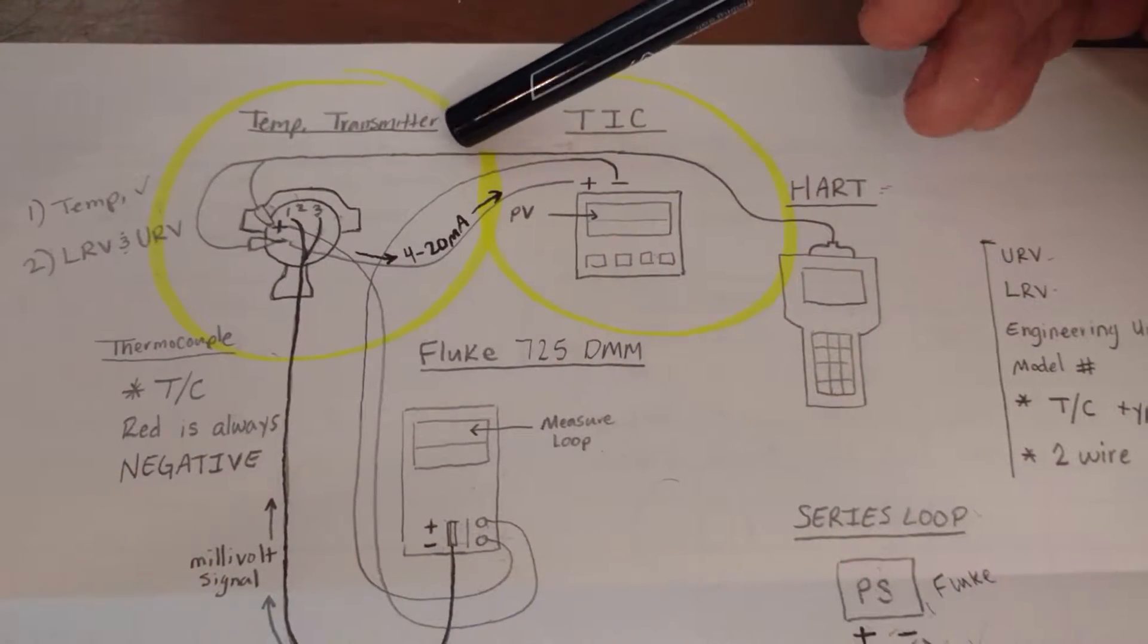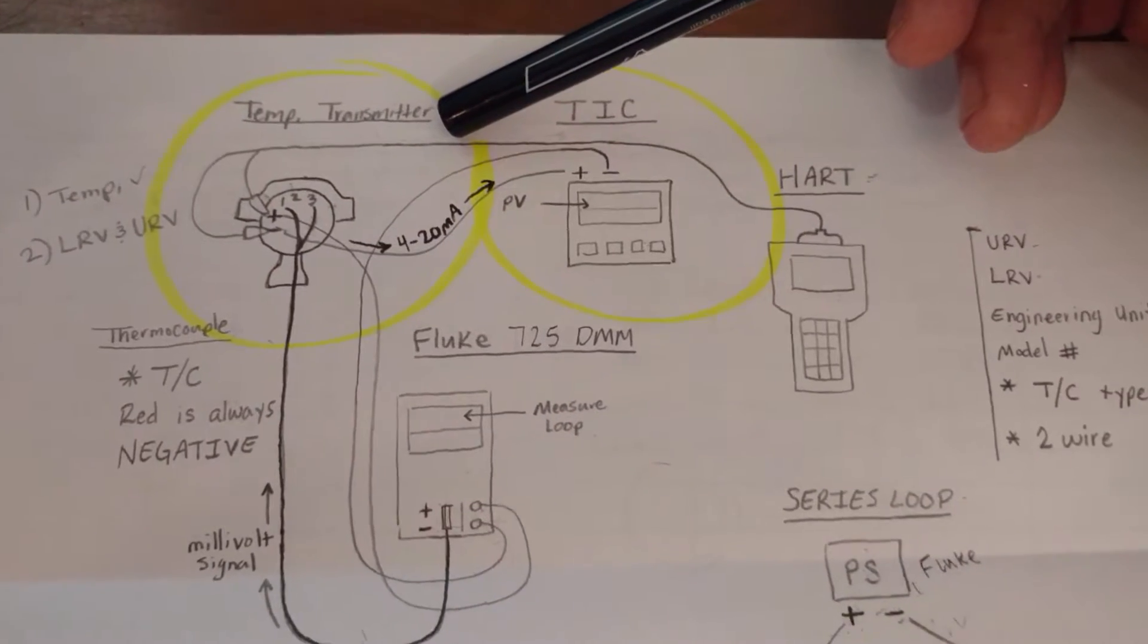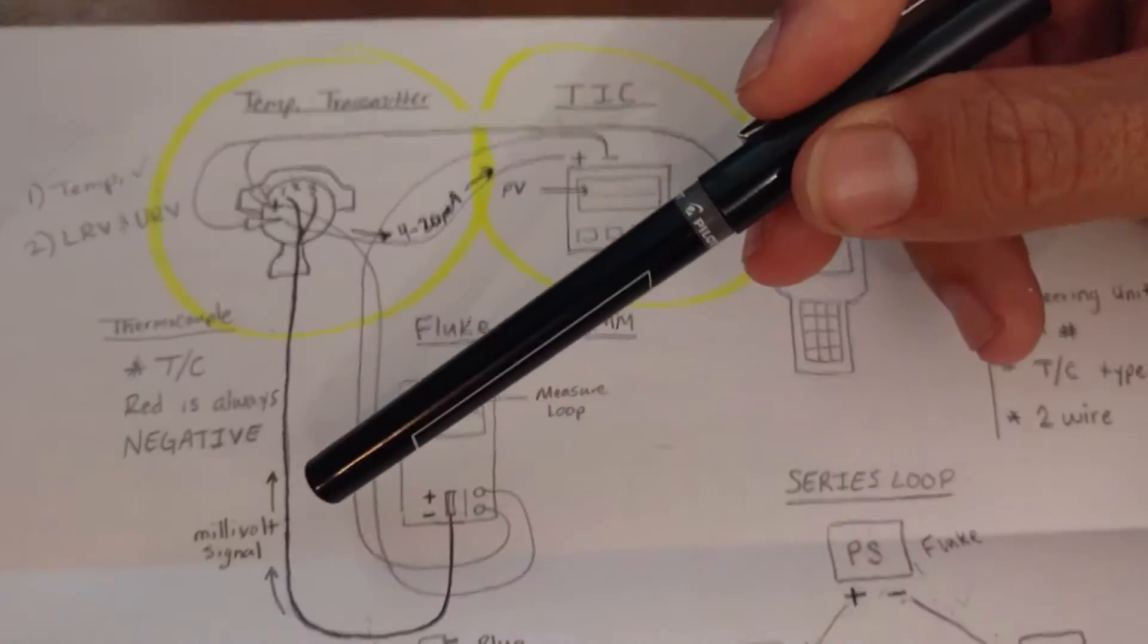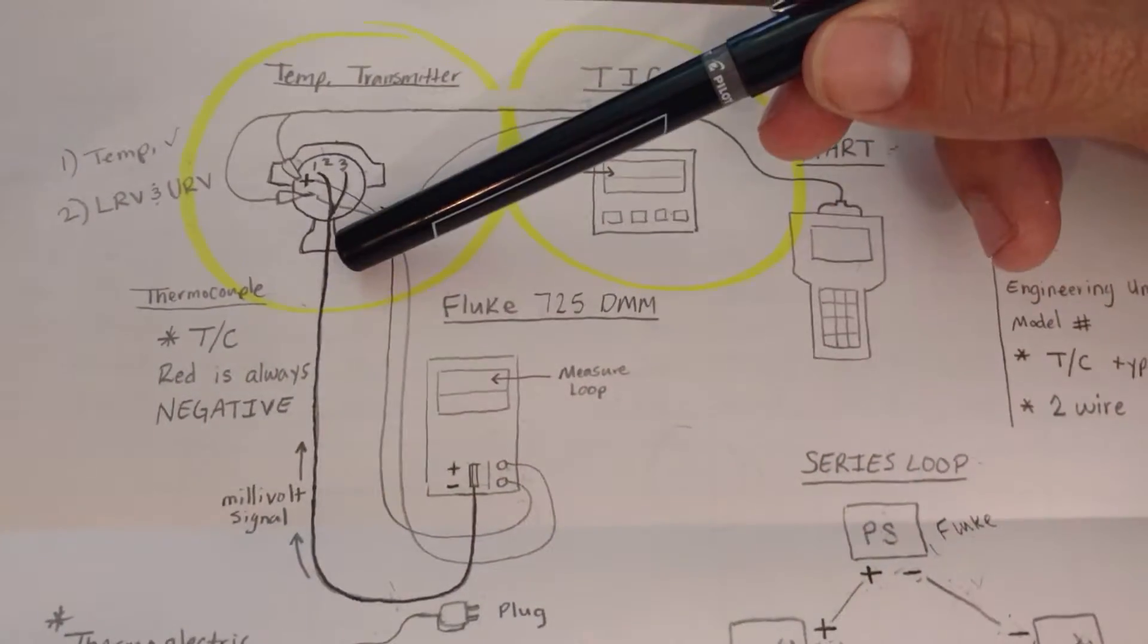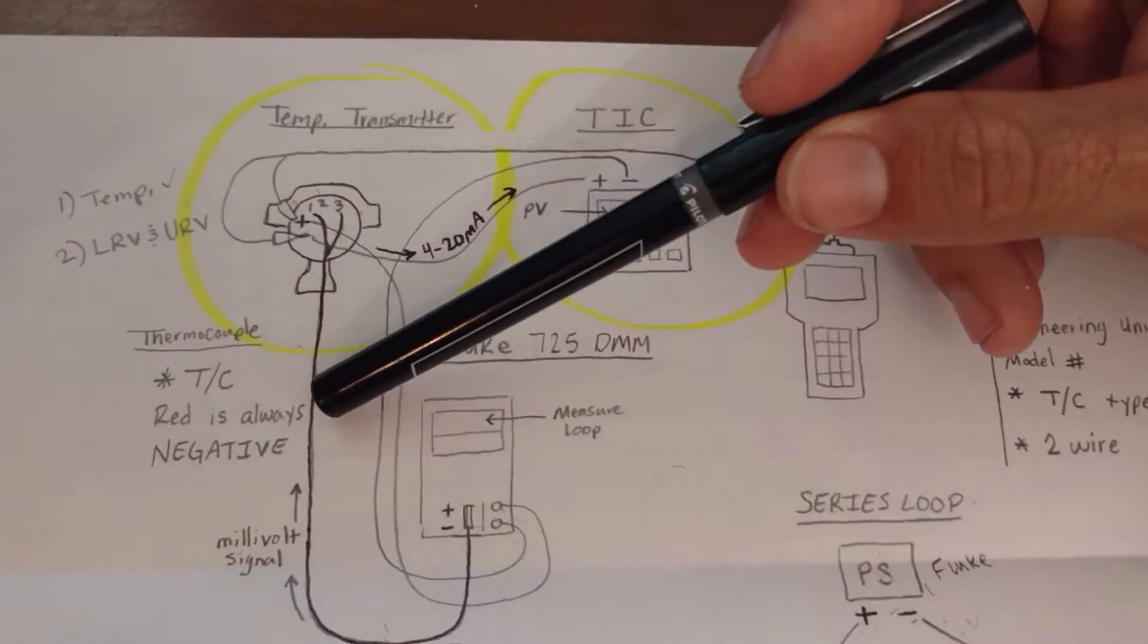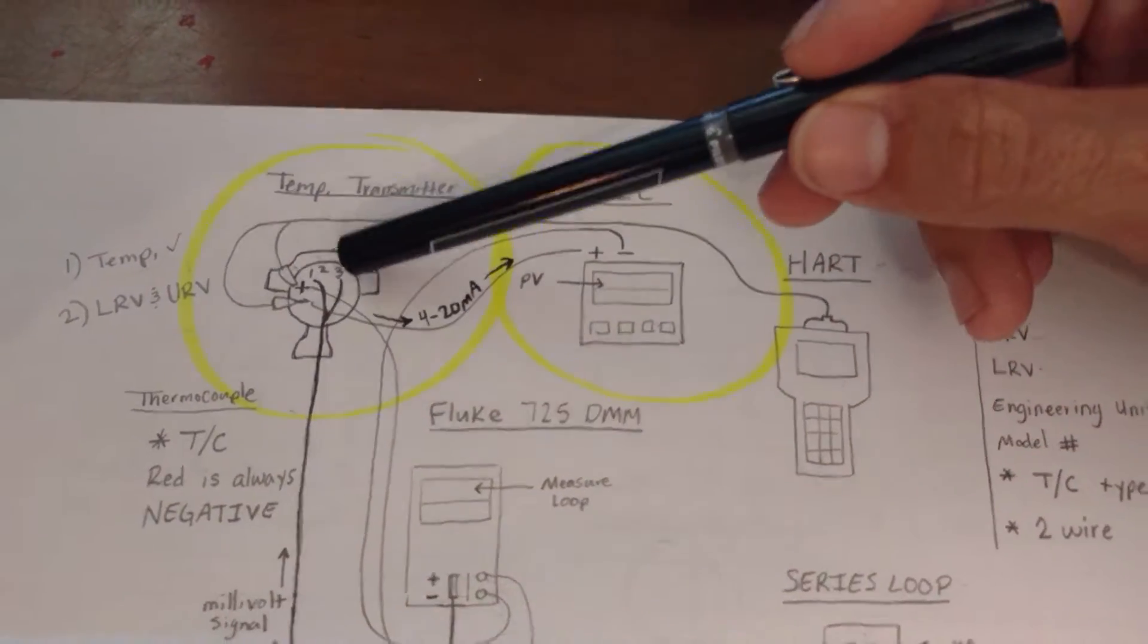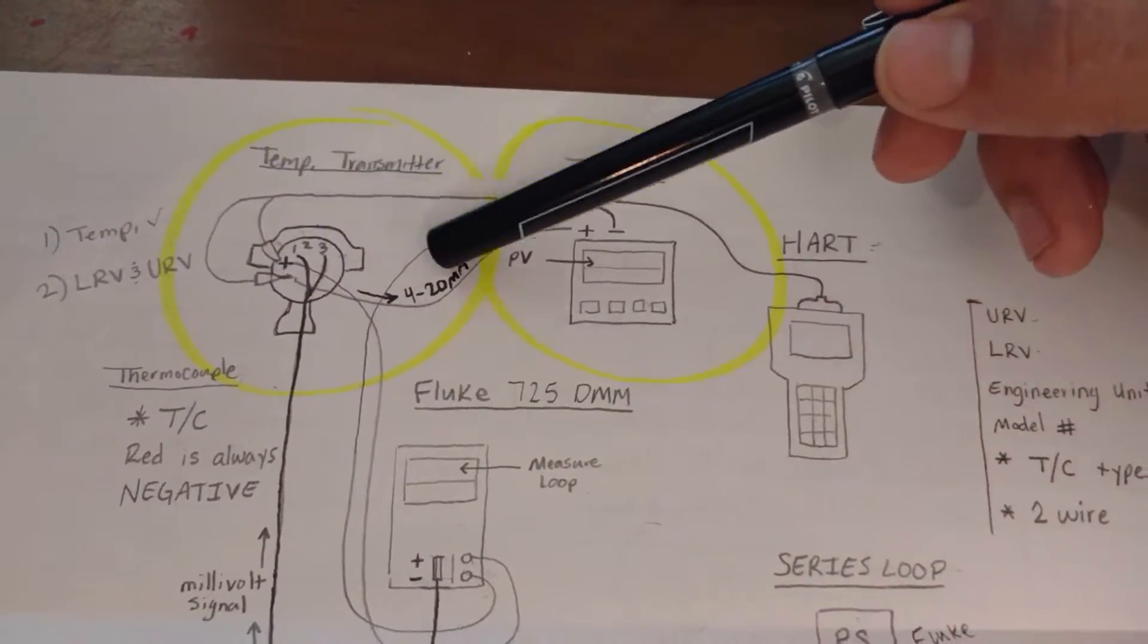It is a transmitter, which means it's going to transmit a signal. This means that it's going to take one signal type, and in this case a millivolt signal, which is going to represent a temperature because we're using a thermocouple. It's going to take one signal type and transmit it into another signal type.